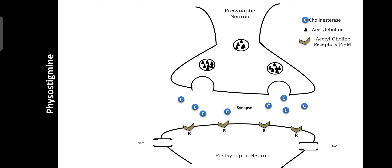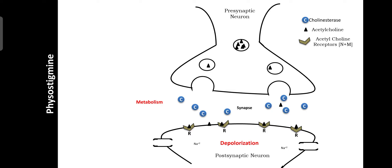Regarding the mechanism: normally, in presynaptic neurons, synaptic vesicles release acetylcholine. Of that released acetylcholine, some molecules act on the receptors and some molecules are metabolized due to the presence of the cholinesterase enzyme. Due to this metabolism by the cholinesterase enzyme, less effect is produced by acetylcholine.